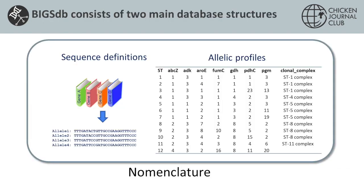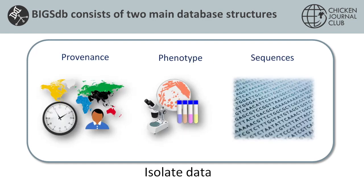To reiterate: we have two database structures. The first is for nomenclature, containing every known allelic variant of a locus. It can also contain allelic profiles for schemes such as MLST, where we assign sequence type numbers to each unique combination of particular alleles. Then we have the isolate database containing provenance information such as location and date of isolation, possibly phenotype, and sequence data such as a genome assembly.